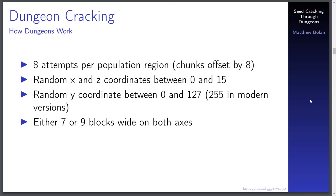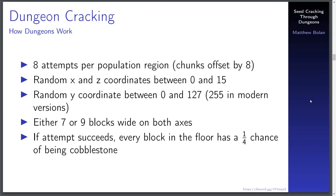The final bit of randomness is that if the game does find sufficient conditions for a dungeon to spawn, every block in the floor has a one-in-four chance of being cobblestone. If you count up the bits of information that each one of these calls gets you, you actually have more than enough to recover an entire population seed — more than 48 bits of information the vast majority of the time. So dungeons are a pretty prime candidate for seed reverse engineering.